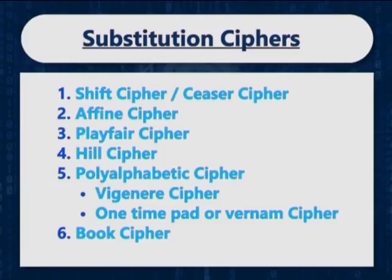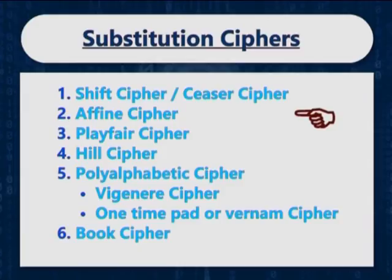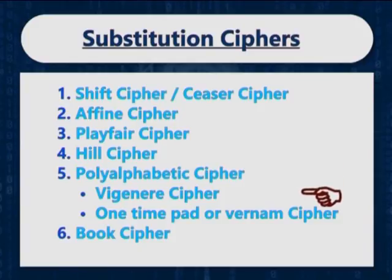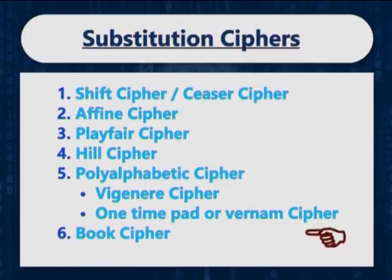In the previous lecture, we had done the introduction about cipher and also covered three types of ciphers: shift cipher, affine cipher and playfair cipher. Today, we are going to talk about hill cipher, Wigney cipher, Vernam cipher and book cipher. Let us start with the hill cipher first.